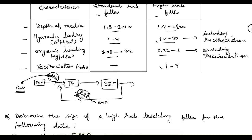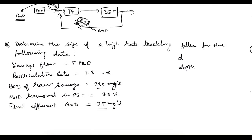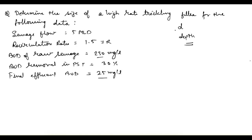Now let's see Problem 1: determine the size of a high rate trickling filter for the following data. Sewage flow is 5 MLD, recirculation ratio R = 1.5, BOD of raw sewage is 230 mg/L, BOD removal in PST is 30%, and final effluent BOD desired is 25 mg/L. We need to find the diameter and depth. We can assume the depth from the known range, and find the area and volume using the NRC efficiency formula.